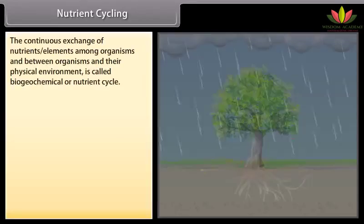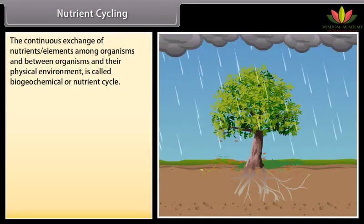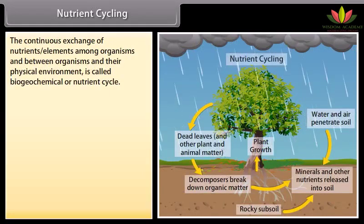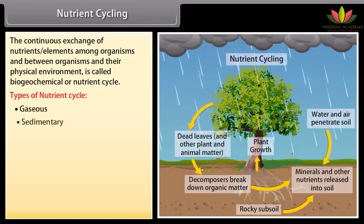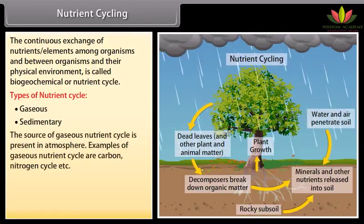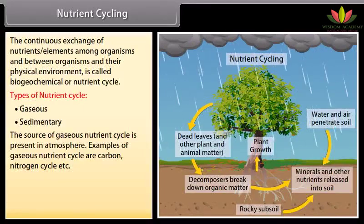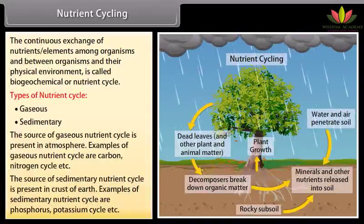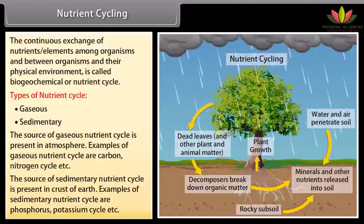The continuous exchange of nutrient elements among organisms and between organisms and their physical environment is called a biogeochemical or nutrient cycle. Types of nutrient cycles: gaseous and sedimentary. The source of a gaseous nutrient cycle is present in the atmosphere; examples include the carbon and nitrogen cycles. The source of a sedimentary nutrient cycle is present in the crust of the earth; examples include the phosphorus and potassium cycles.